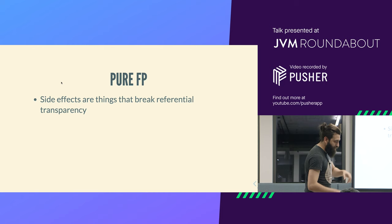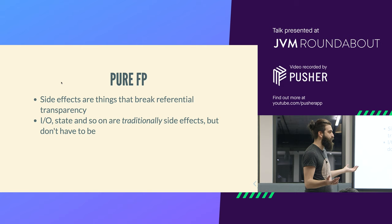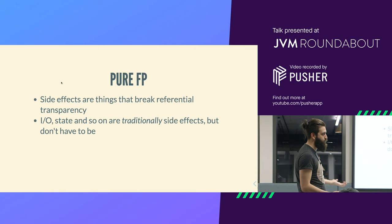As a recap, side effects are things that break referential transparency - that's the definition, nothing more than that. IO, state and things like that, traditionally, are side effects because they break referential transparency, but they don't have to be. If you do them in a referentially transparent manner, then they're pure.